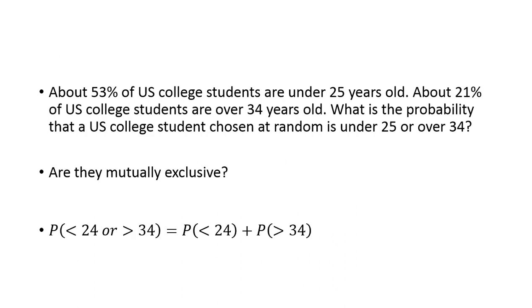About 53% of college students are under age 25 and about 21% are over age 34. What's the probability that a U.S. college student chosen at random is under 25 or over 34? These are mutually exclusive because nobody can be under 25 and over 34 at the same time. So you just add them: 0.53 plus 0.21 gets you just short of 75%, or about 0.74.